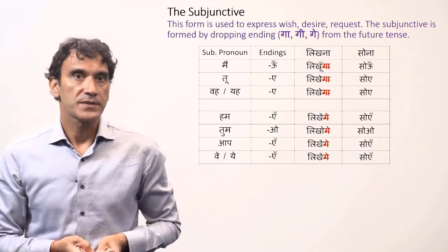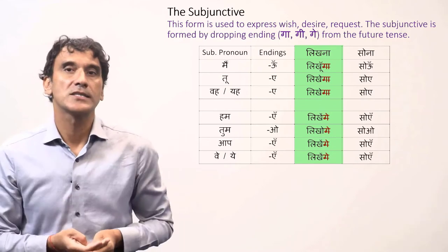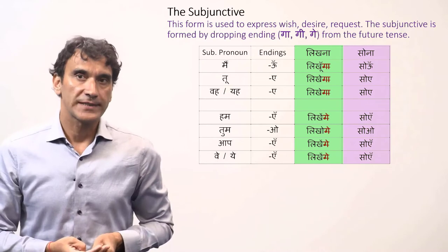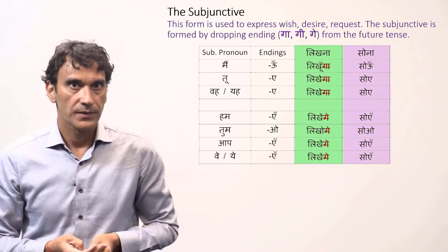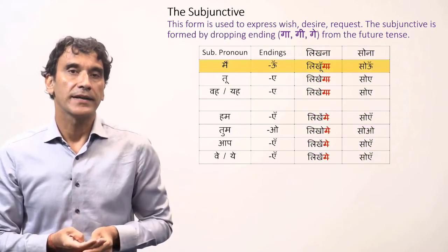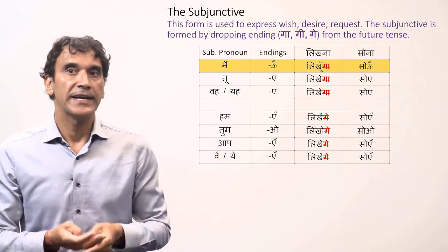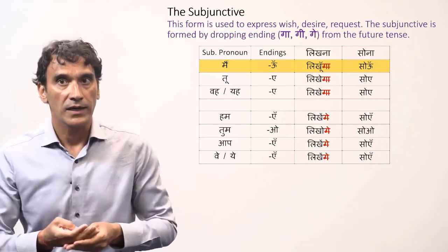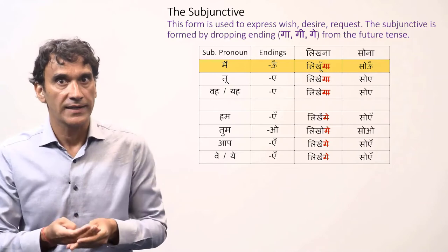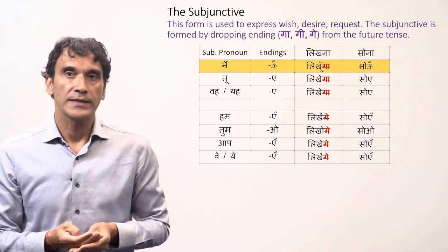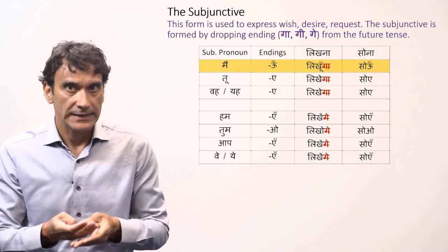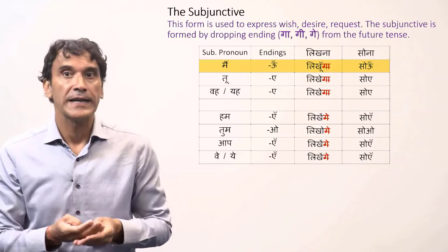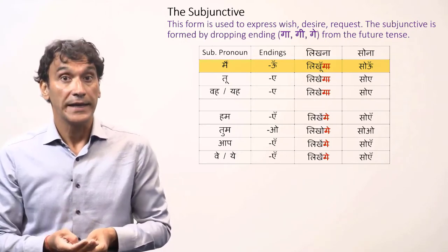Here's the table for the subjunctive forms. We'll take two verbs — likhna (to write) and sona (to sleep) — as examples. To make subjunctive forms, likhna has a consonant-ending root and sona has a vowel-ending root. For the subject main (I), you can either add the ending to make it likhun, or delete the ending ga from the future tense form likhunga, giving likhun. For the verb sona, it is son. So to form subjunctive forms, you either add the endings to the root or remove the ending ga/ge/gi from the future tense forms — either way you get the same form.